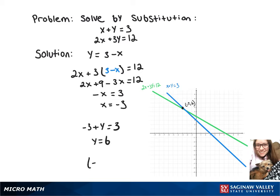So our solution to this system is negative 3, 6, which as you can see on the graph is the point where the lines intersect.